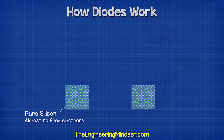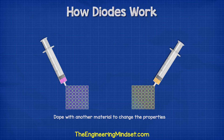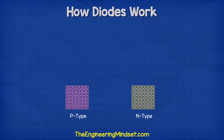Pure silicon has almost no free electrons. So what engineers do is dope the silicon with a small amount of another material to change the electrical properties. We call this P-type and N-type doping.